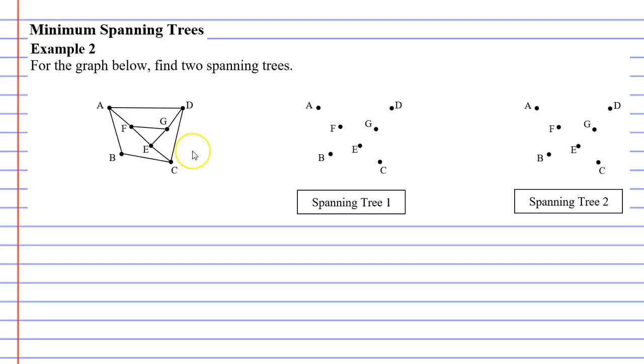Now if I was to color over the graph in red to make a spanning tree, I could quite simply do this, remembering that a spanning tree needs to connect every single vertex and also needs to have no loops, no multiple edges, and no cycles.